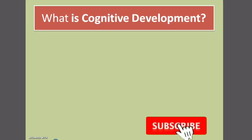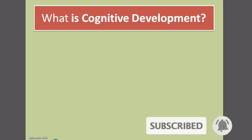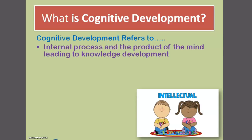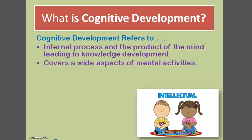First of all, we will learn what cognitive development is. Cognitive development means the internal processes and products of the mind leading to knowledge development. It is an internal process and a product of the mind — internal processes such as memorizing, remembering, and thinking. The product of the mind covers a wide aspect of mental activity.